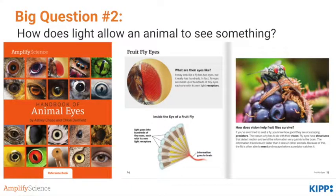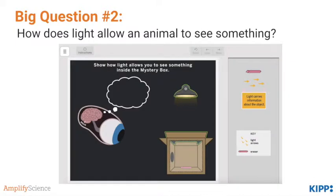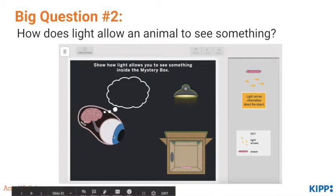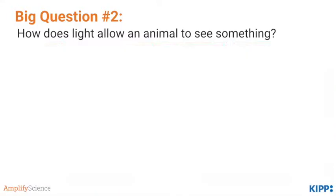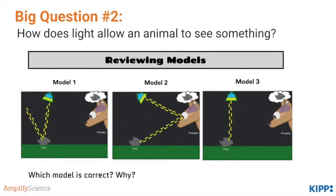Students go on to read the book Handbook of Animal Eyes, learning that all kinds of animals have light receptors in their eyes that receive information from the outside world and transmit it to the brain. Next, students draw or work on the computer to create a model of how light travels from a light source to an object in the mystery box, reflects off that object, and then goes into an observer's eye, forming an image in their brain. Students read the text I See What You Mean to further solidify the idea of how light travels to our eyes and how we use scientific explanations to understand the world. Students then look at three different models of how light travels and have a class discussion on which one is correct and why.